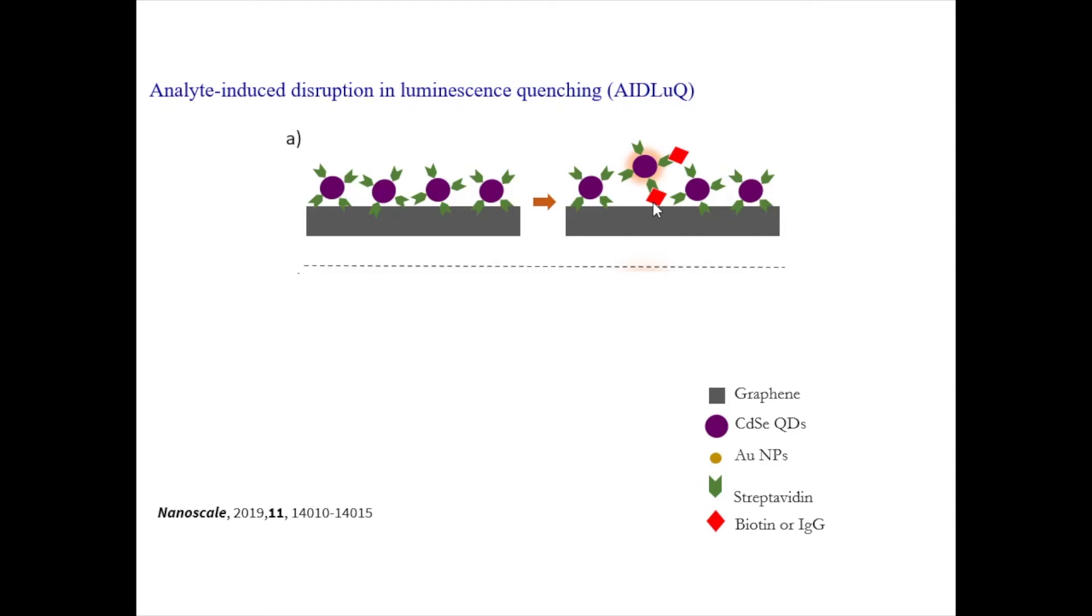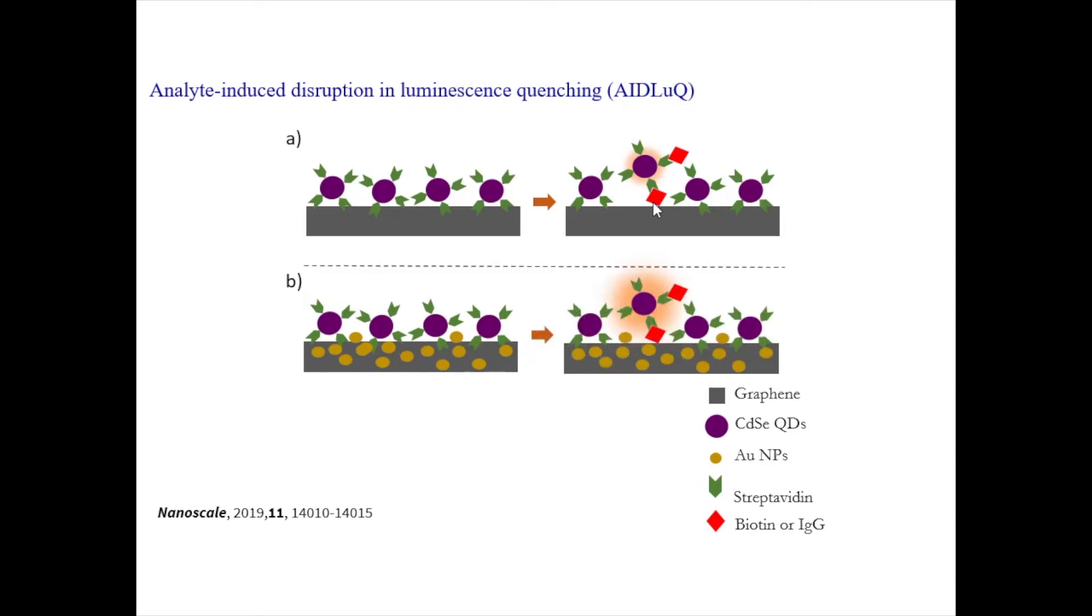And this fluorescence could be further enhanced by adding, by embedding gold nanoparticles into the graphene layer. So when the antibody is attached and it lifts the quantum dot above the graphene surface, you get much higher fluorescence because the nanoparticles, the gold nanoparticles at certain wavelengths of light, especially green and visible wavelengths, they enhance the fluorescence in emission by changing the distribution of electric field within the sample.